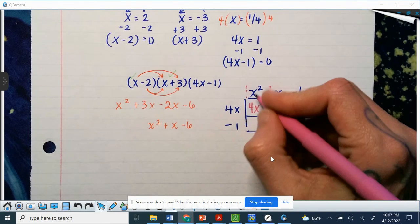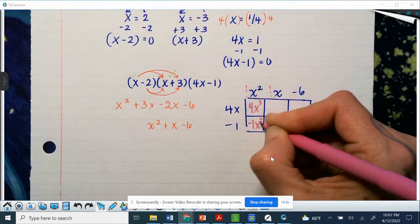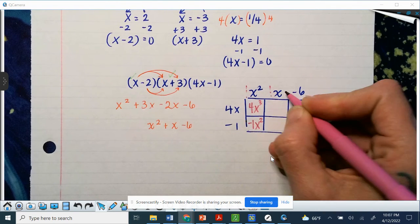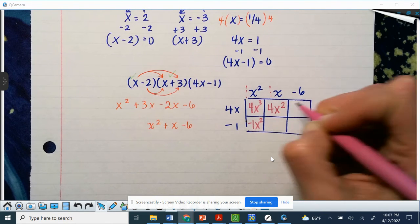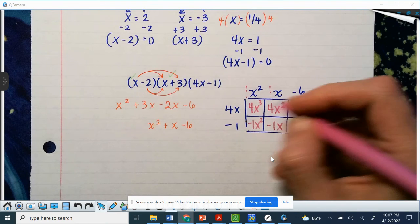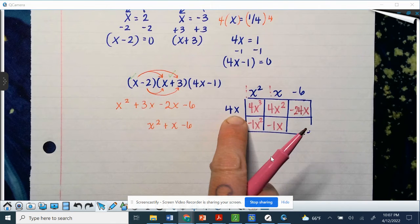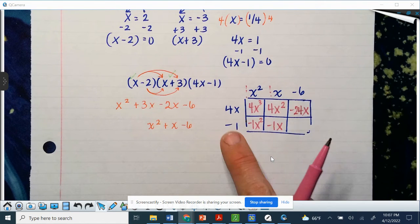4x times x squared is going to give us 4x cubed, because there's an imaginary 1 in front of these as well. So that's 4x to the third power, because 2 and 1 is 3. Go down, so 1 times negative 1 is negative 1x squared. 4x times x is 4x squared. x times negative 1 is negative 1x. Negative 6 times 4 is negative 24x. And then negative 6 times negative 1 is a positive 6.